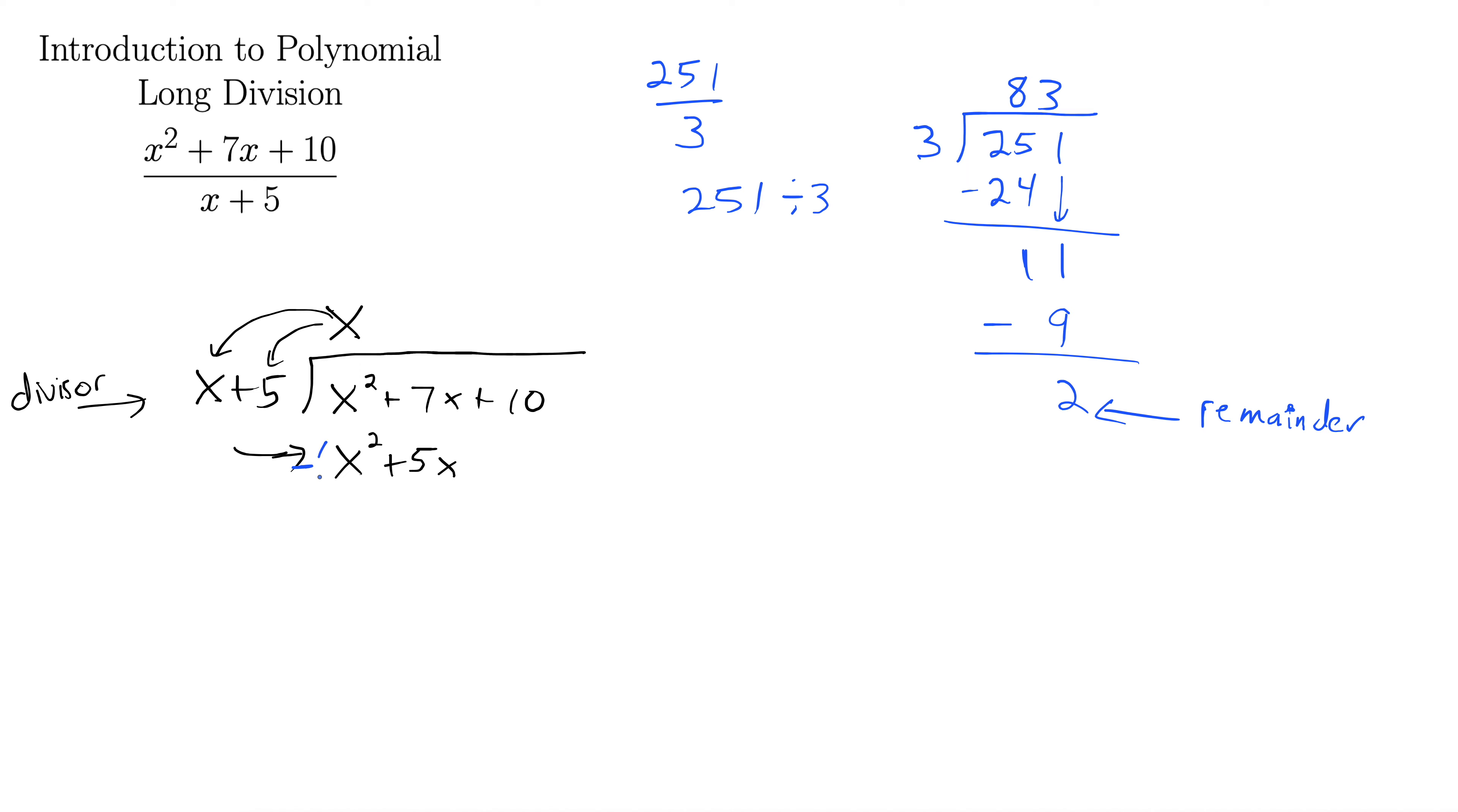So then after that, you subtract this right here, and I put parentheses around it to remind me that this negative goes all the way through to both terms. We're subtracting off both terms here. By design, these x words cancel out, so we're good to go there. And then we have 7x minus 5x, 2x. And then just like we brought down over here with the numbers, we bring down this plus 10.